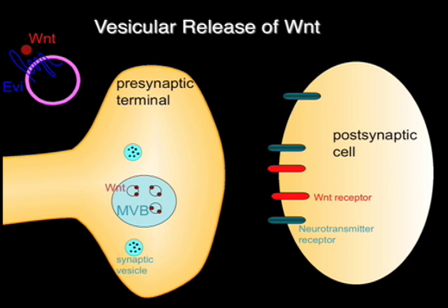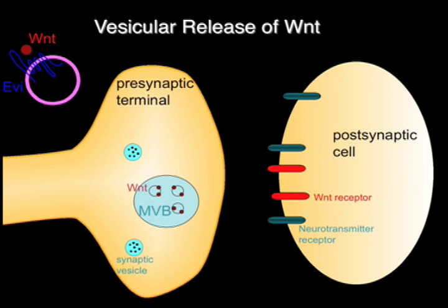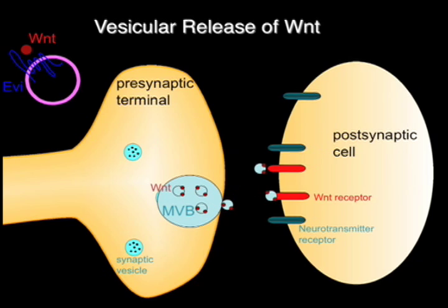In our study in this issue of Cell, we substantiate a novel mechanism for the transmission of a Wnt signal across the synapse. We show that Wnt rides on a vesicle through binding with a transmembrane protein, EV, present in the vesicle. Unlike classical exocytosis of soluble neurotransmitters, the Wnt-EV vesicle is released as an intact vesicle, which travels to the postsynaptic sites to present Wnt to its receptor and to carry out other functions in the postsynaptic cell.